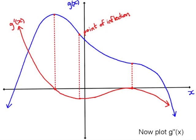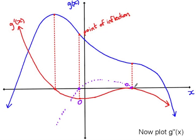Now let's think about the second derivative — this is like plotting the gradient of the gradient function. Looking at the red graph, the gradient is negative, reaches zero, then positive, reaches another zero, then negative again. So the zero-gradient points on the first derivative become zero values on the second derivative. The second derivative is negative, zero, positive, zero, negative.